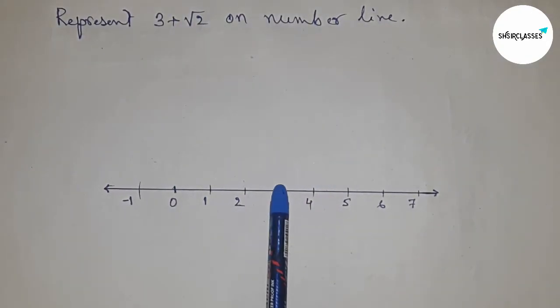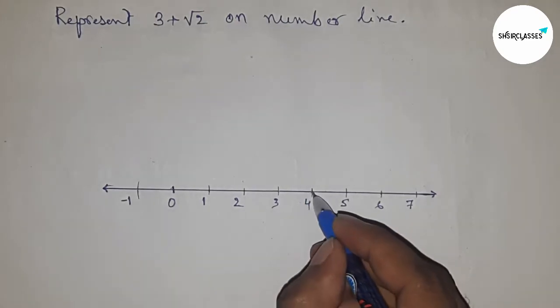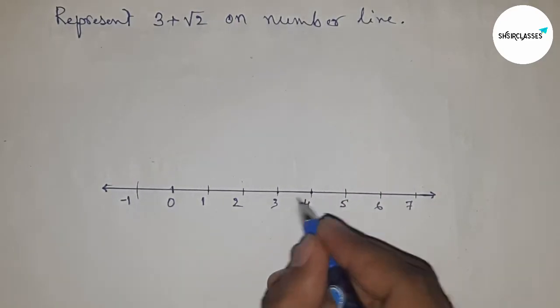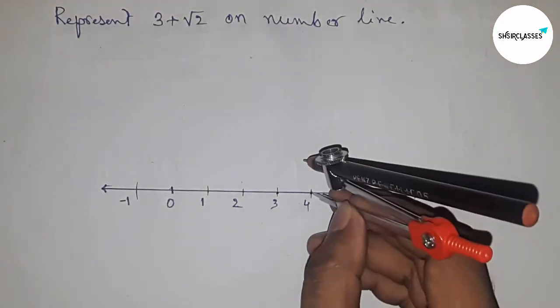Now, having to construct 3 plus root 2 on number line. So constructing 3 plus root 2 between 3 and 4. First, drawing root 2 on 4. So having to construct root 2 on 4.